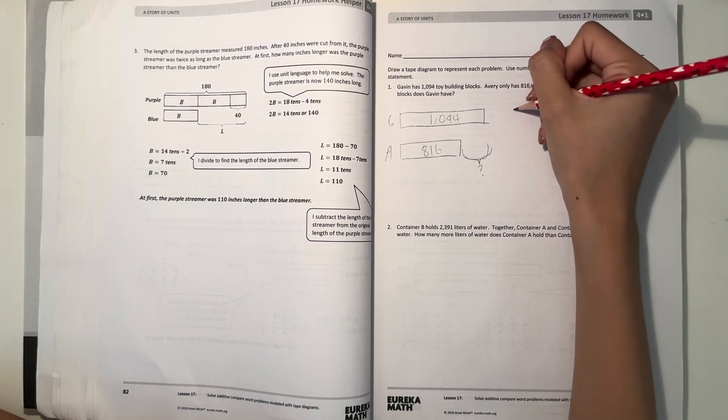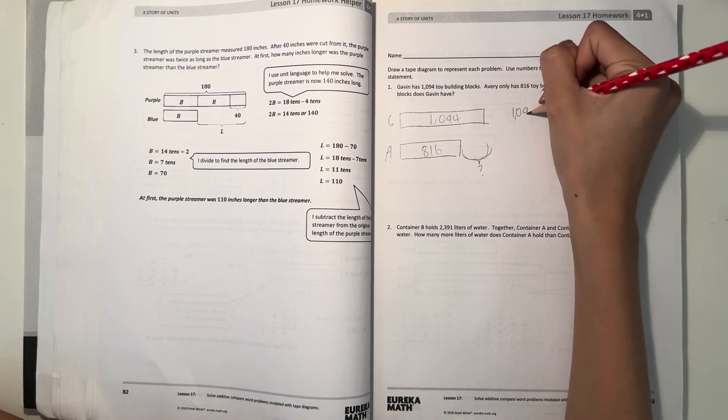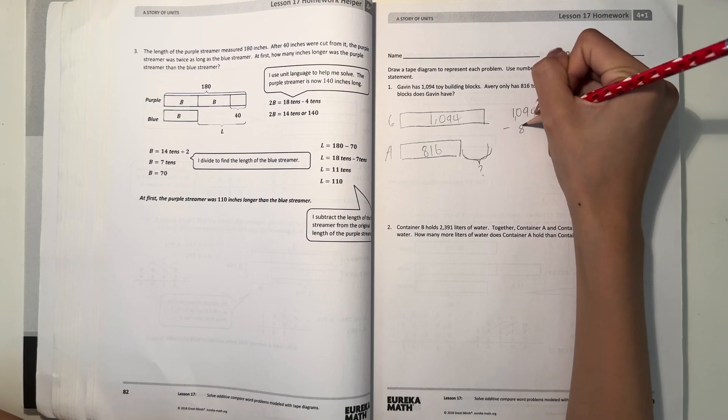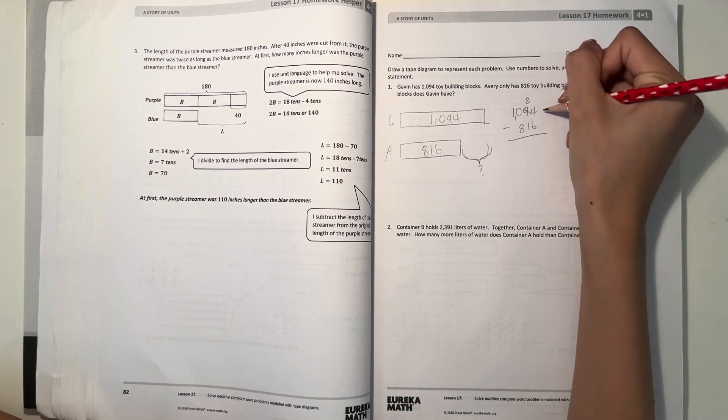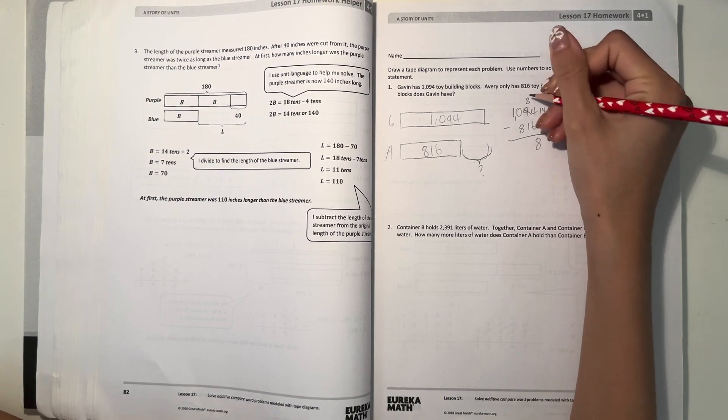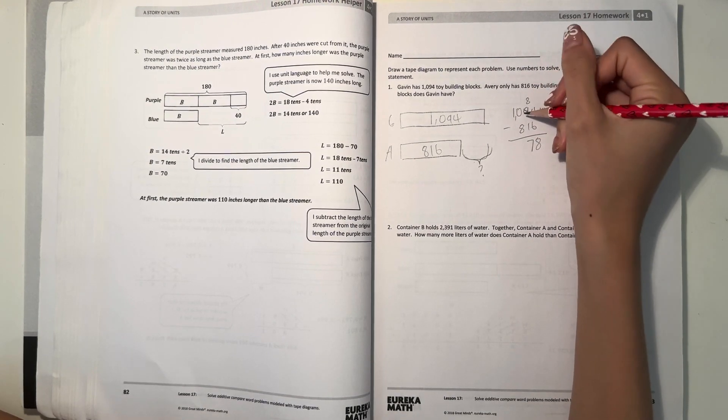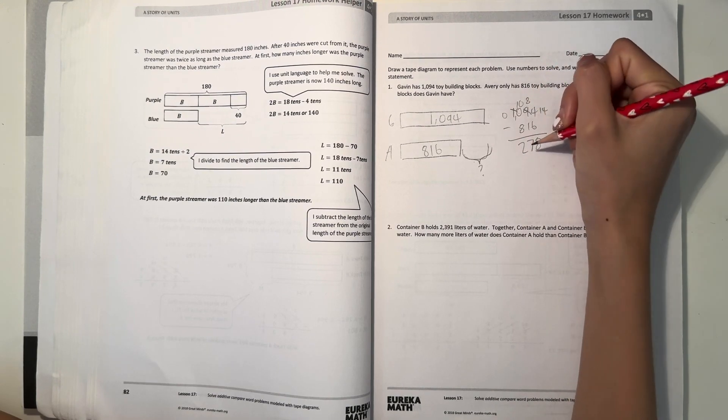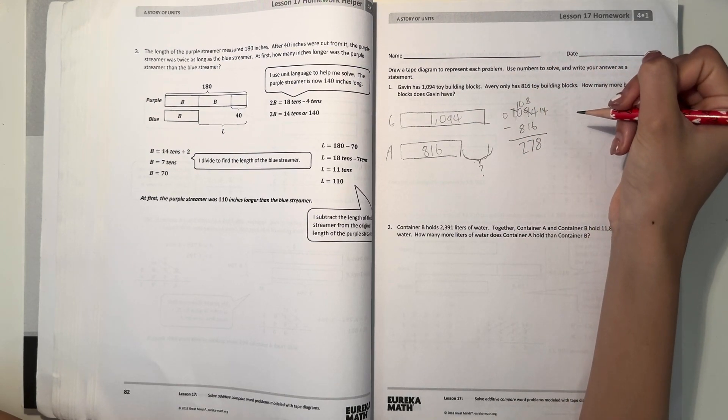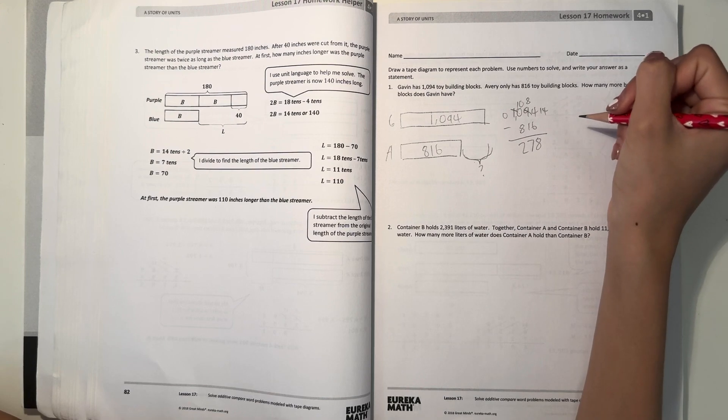So what we can do is to subtract. 1094 minus 816. 4, borrow a 10. 14 minus 6 is 8. 8 minus 1 is 7. And 0 minus 8, borrow a 10, is 2. So he has 278 more building blocks.